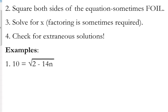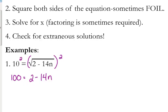To get rid of a square root, we are going to square both sides. So 10 squared is 100. When you square a square root, it goes away — that's the point in doing it. So the right side is just equal to 2 minus 14n.